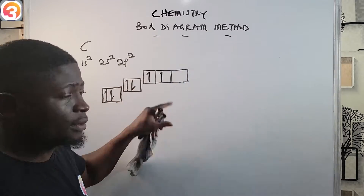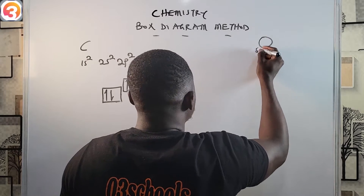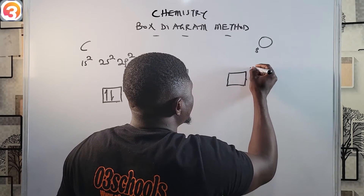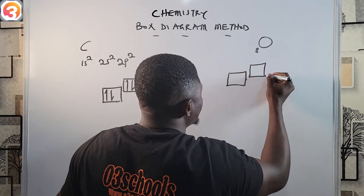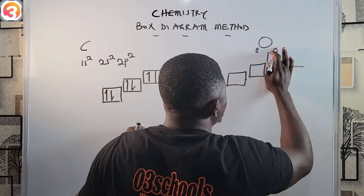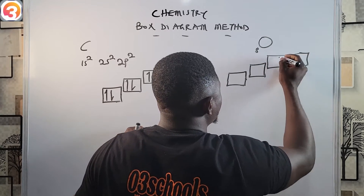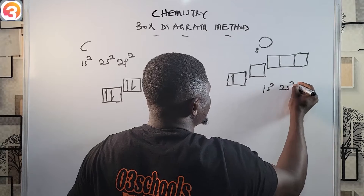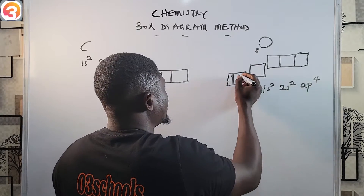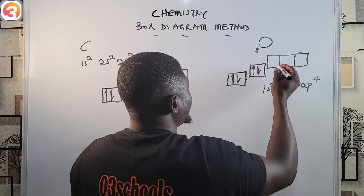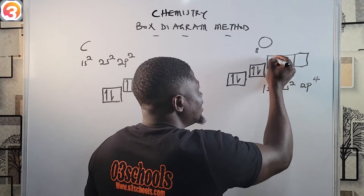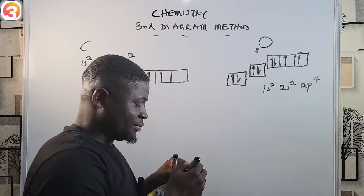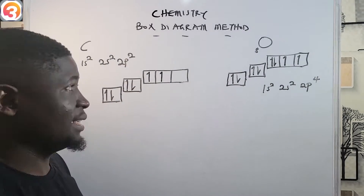For oxygen, the eighth element with eight electrons — 1s², 2s², 2p⁴ — we draw the first box, the second box, and the third box with three degenerates. One arrow up and one down in the 1s and 2s boxes. For the 2p, we start filling singly: one up, one up, one up across the three degenerates. One electron remains, so we pair it in the first degenerate.